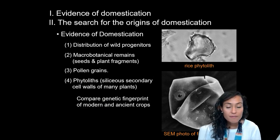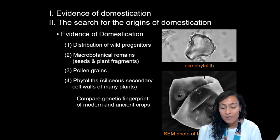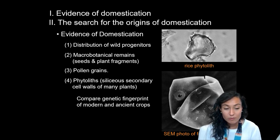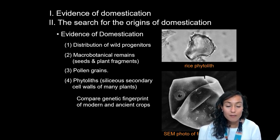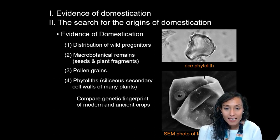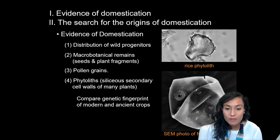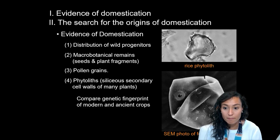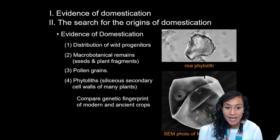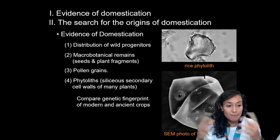Another source of evidence are what's called phytoliths — basically vegetable tissues, the remains and husks of things like grain and corn. The identification of pollen grains as well as phytoliths indicate that early agriculturalists were using bladed threshing sledges to harvest crops. By looking at the structure of phytoliths, archaeologists have been able to compare the genetic fingerprint of modern and ancient domesticates and to determine their original homelands and subsequent spread.